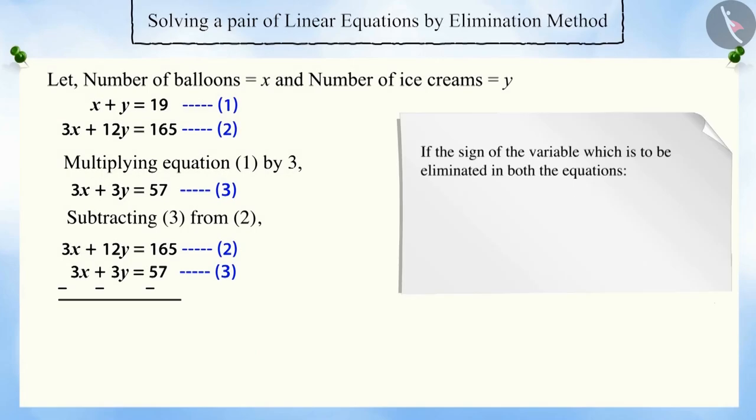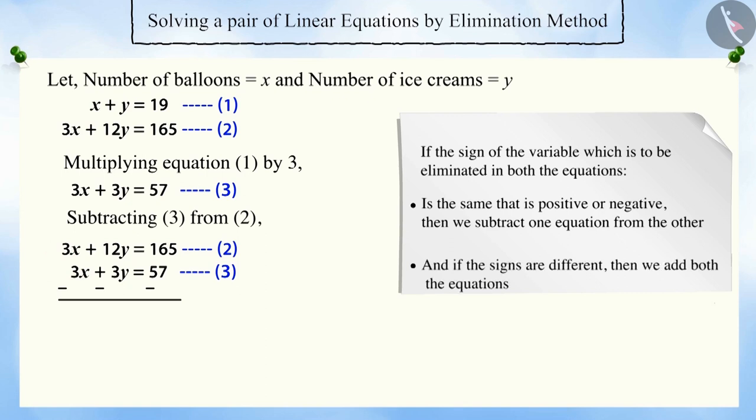If the sign of the variable which is to be eliminated in both the equations is the same, that is positive or negative, then we subtract one equation from the other. And if the signs are different, then we add both the equations. This eliminates one variable and gives a linear equation in one variable only.